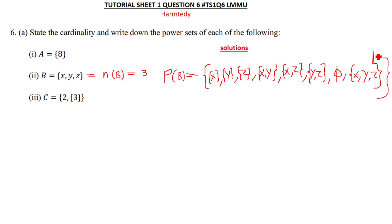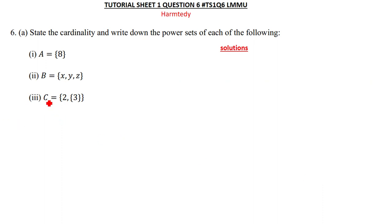So that is what we write when asked for the power set of any given set — it is just as simple as that. Moving on to part c: the cardinality is n = 2, because there are only two elements in set C.